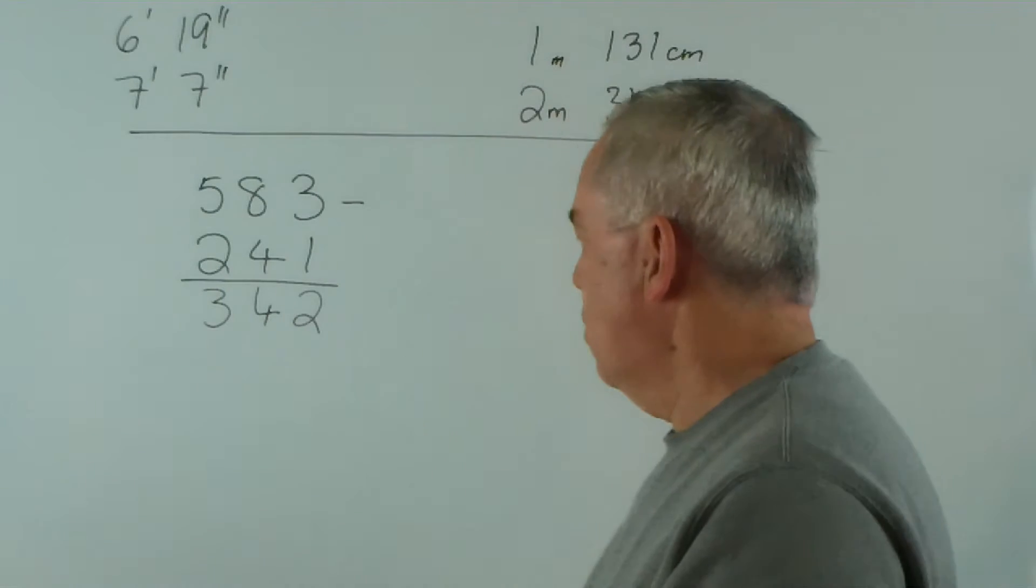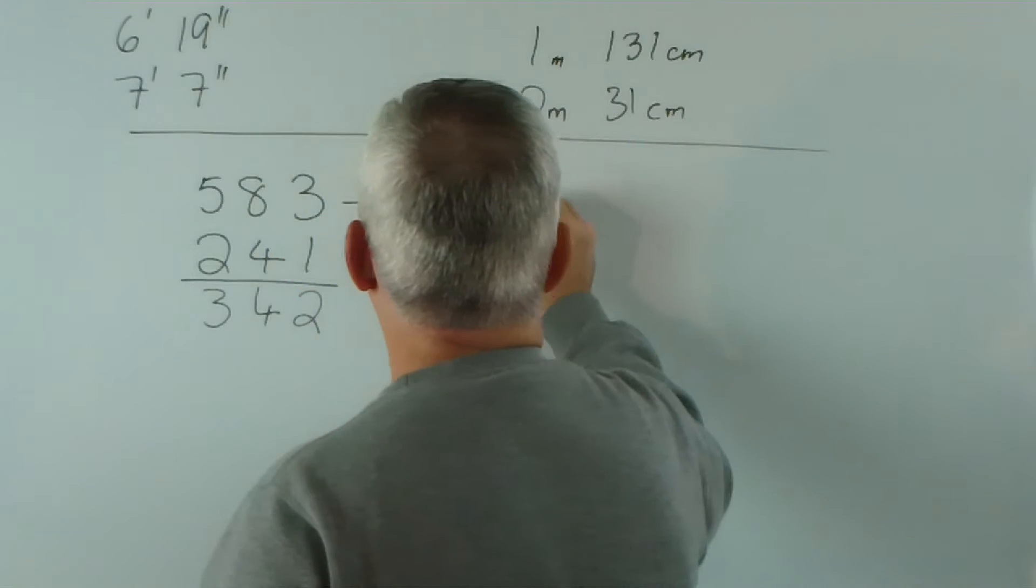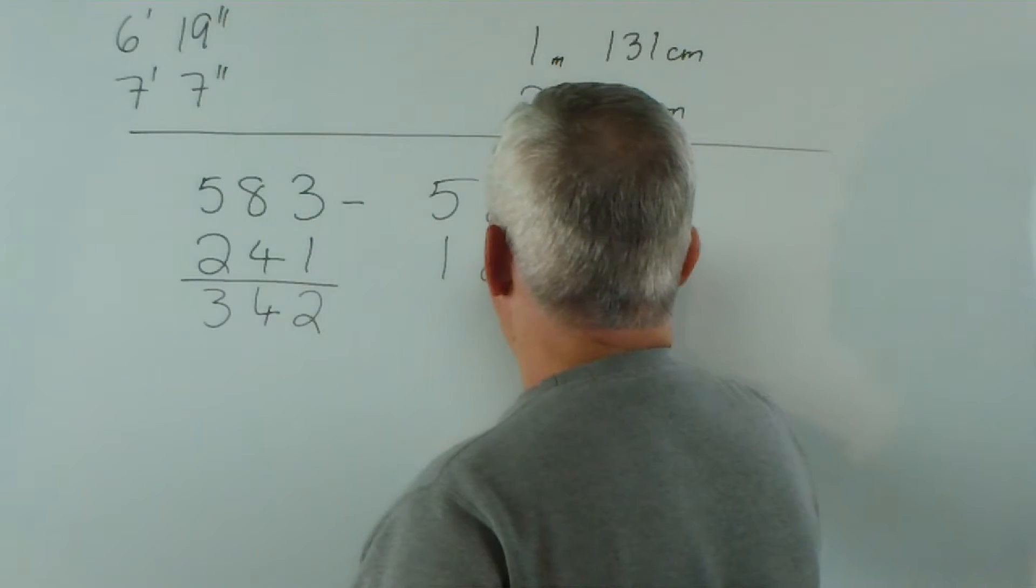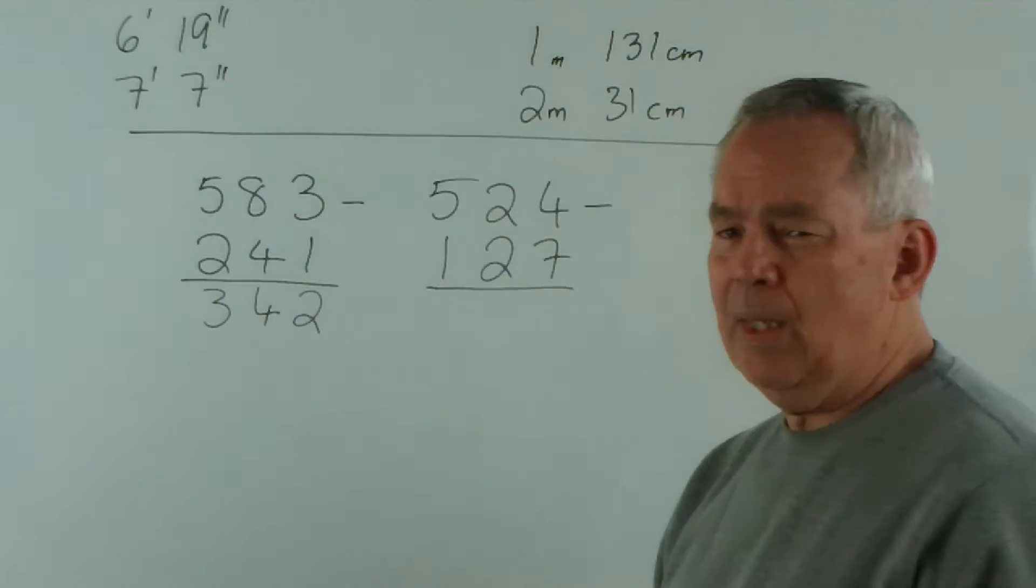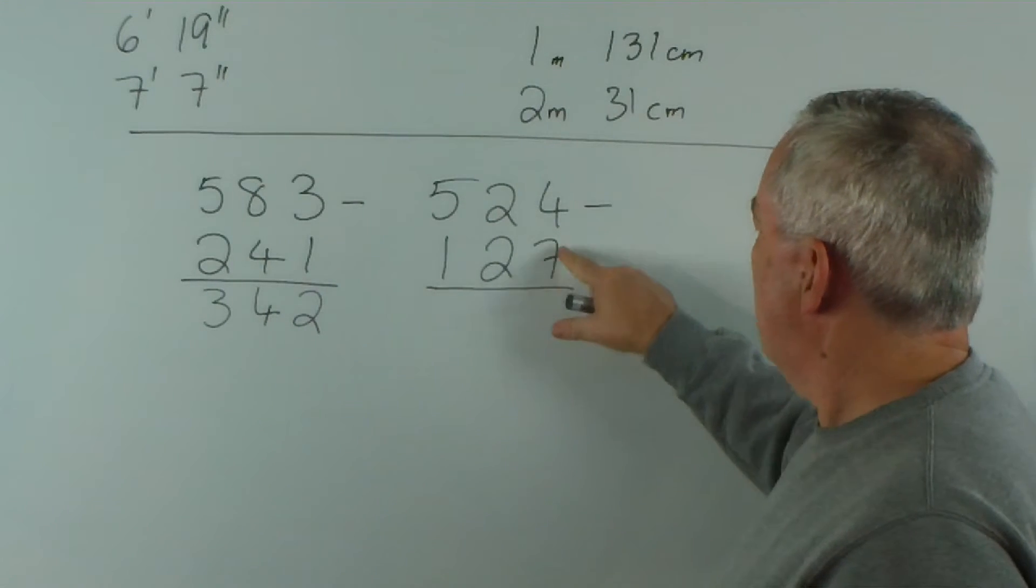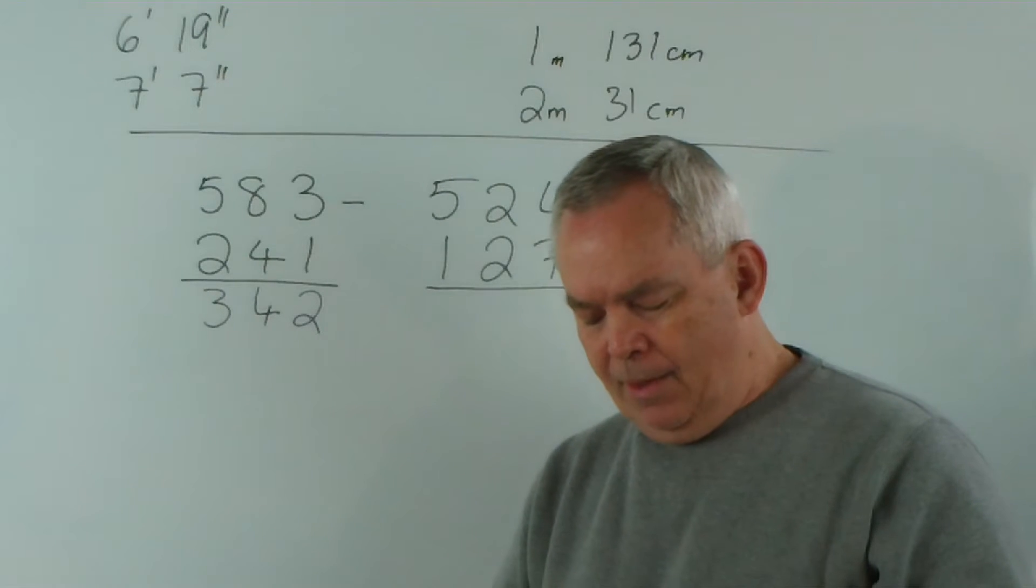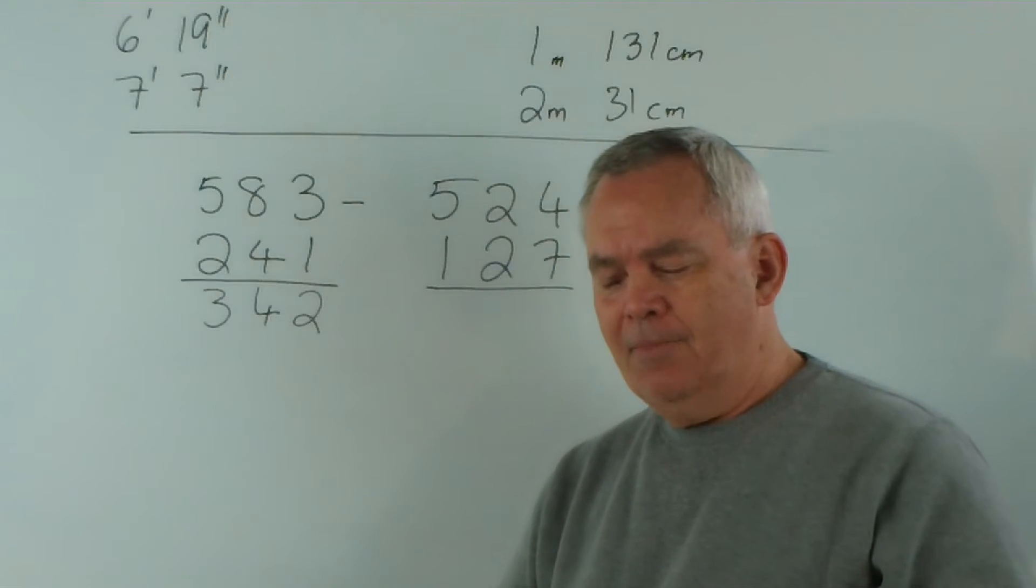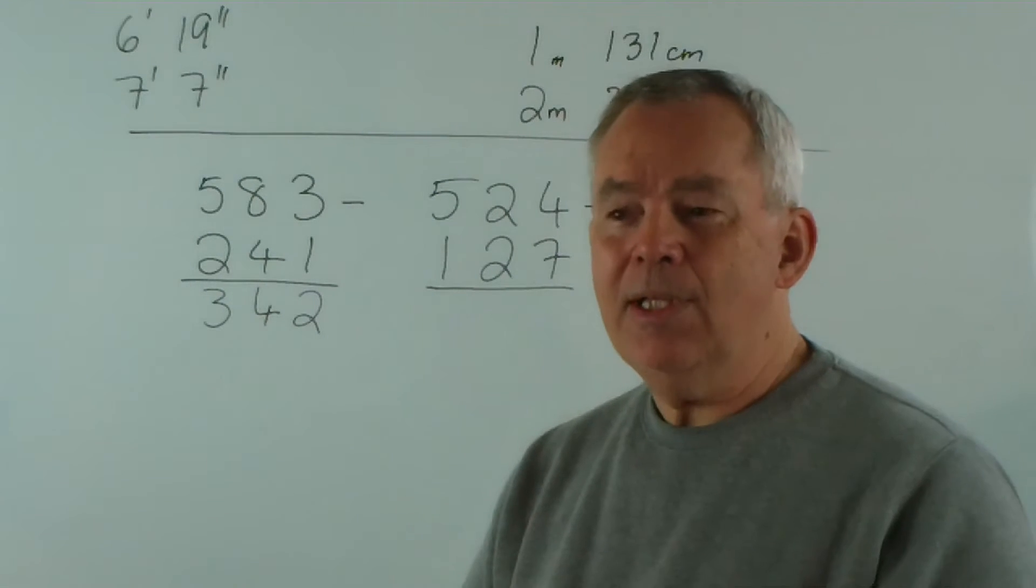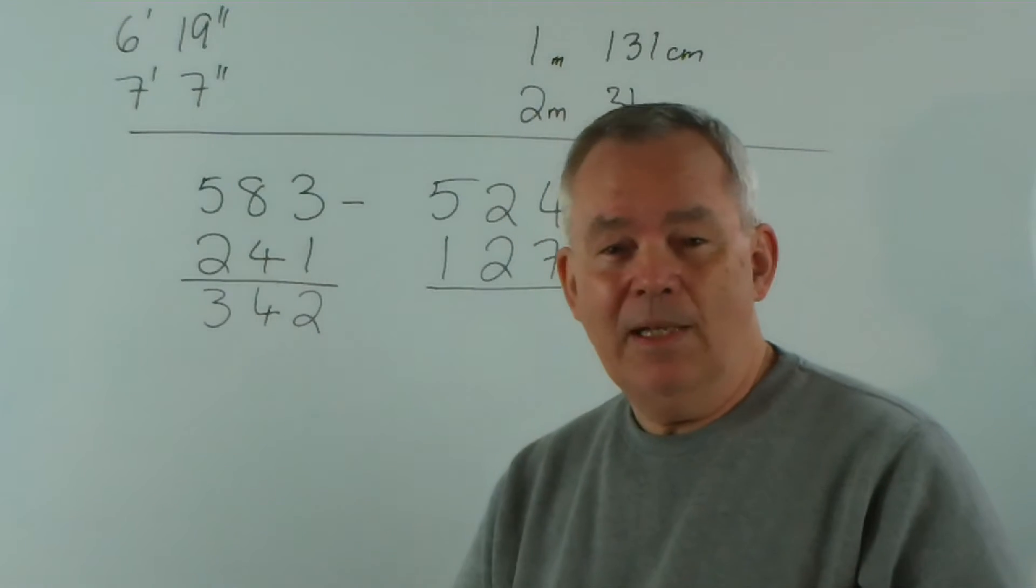That sort of subtraction is quite easy. But what happens when we start — when we get numbers like this — five hundred and twenty-four minus one hundred and twenty-seven? Now we run into a problem. Seven is too big to take away from four and we are disinclined to go into negative numbers.